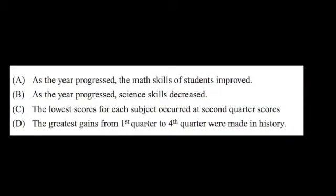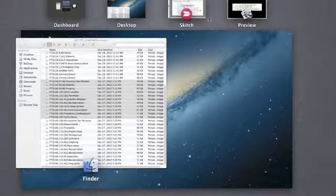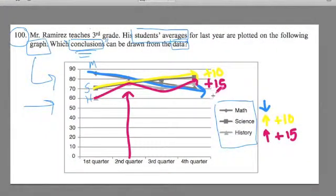The greatest gains from first quarter to fourth quarter were made in history. Now this one is the correct answer. So D is the correct answer. And the only way you could get D, because it's very easy to think that the science is the highest or the science had the greatest gains, is that you make sure that you read D very closely. It starts at 60. It goes up to 75. That one actually has the most amount of gains - history.